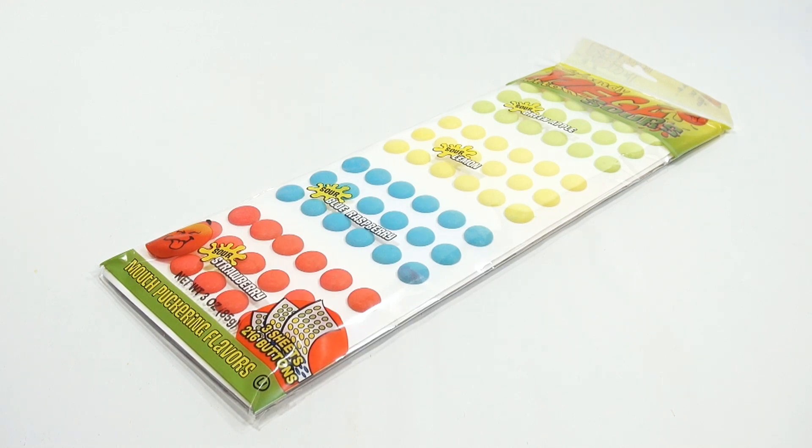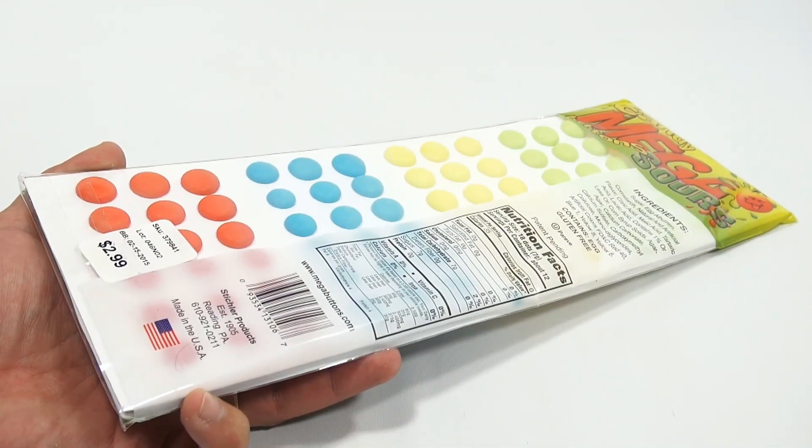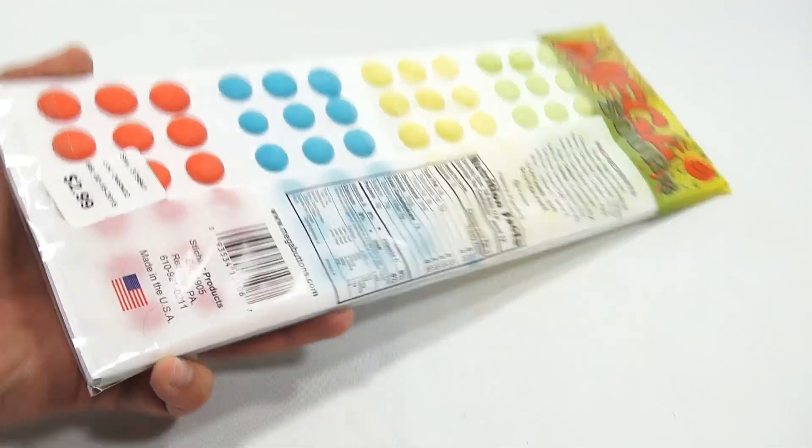Green apple sour, lemon sour, blue raspberry, and sour strawberry. There's three sheets, 216 buttons total, and this was $2.99 at a Cracker Barrel. I don't know where else you can get them, but that's where we got them.